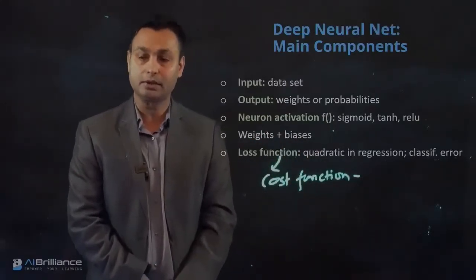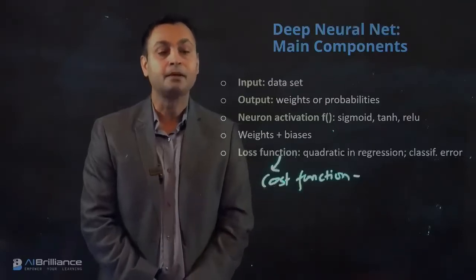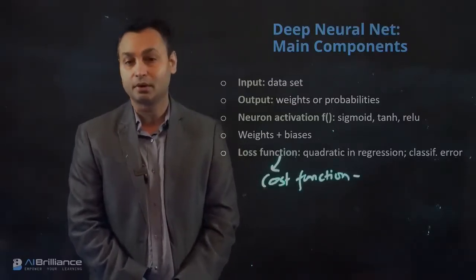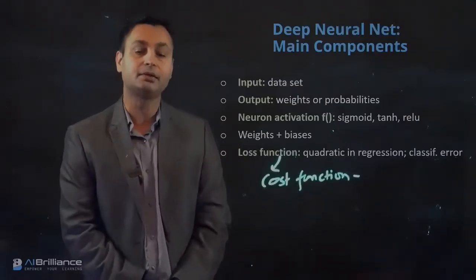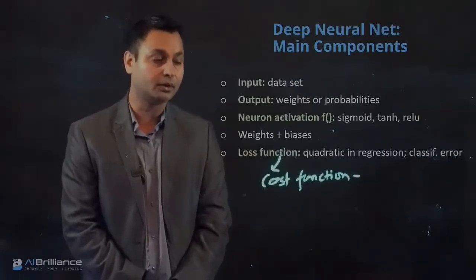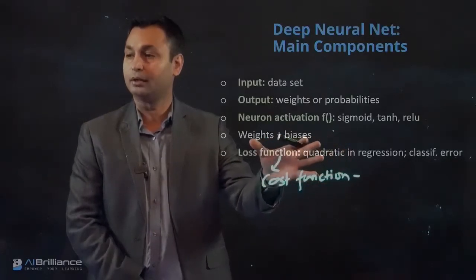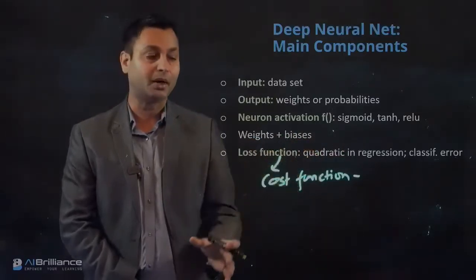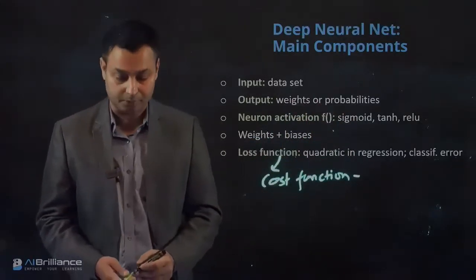This cost function is essentially optimized using an optimization algorithm like stochastic gradient descent that helps us in solving and converging to the final values for the weights and biases, which are the parameters of this optimization algorithm.